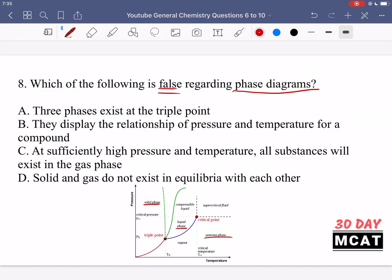Now we're asked which of the following is false regarding phase diagrams. Option A is saying three phases exist at the triple point. Nope, but this is something which is true. Option B is saying that they display the relationship of pressure and temperature for a compound. Yes, that is true. Option C is saying at sufficiently high pressure and temperature, all substances will exist in the gas phase. And option D is saying solid and gas do not exist in equilibrium with each other.